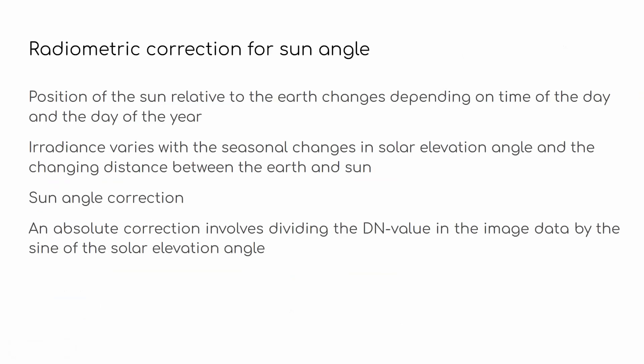Next, correction for sun angle. The position of the sun relative to the earth changes depending on the time of day and the day of the year, so the reflectance — irradiance — varies with seasonal changes in solar elevation angle and the changing distance between the earth and sun. To correct for sun angle, the absolute correction involves dividing the digital value in the image data by the sine of the solar elevation angle.